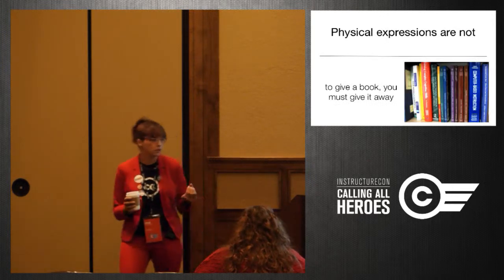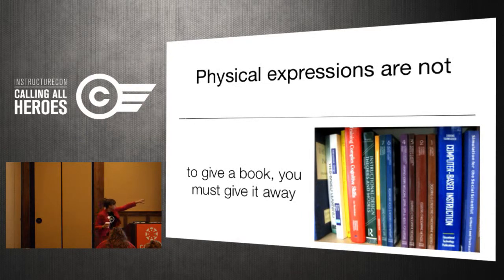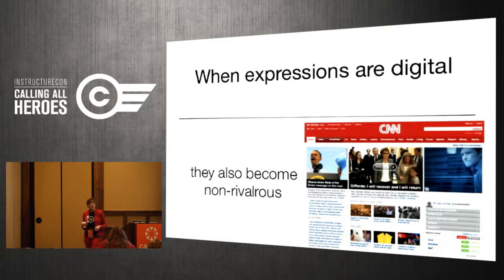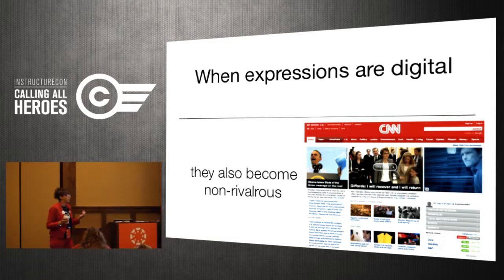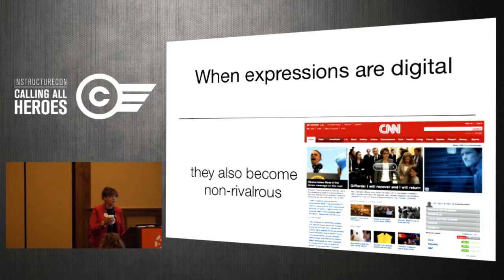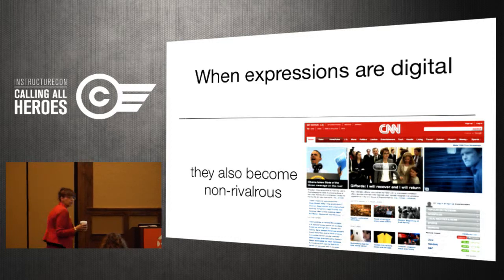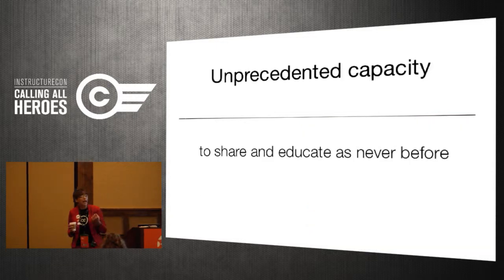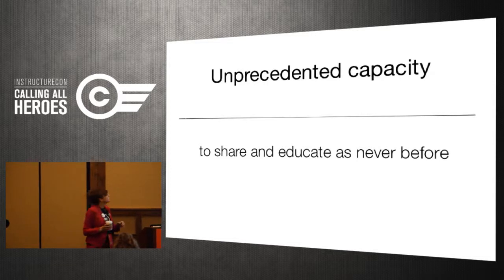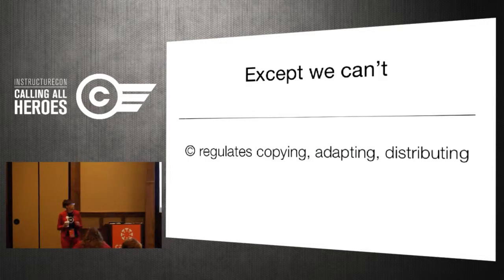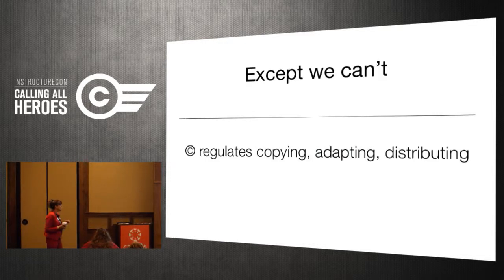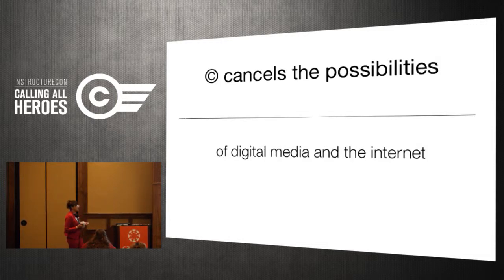However, when we put ideas in a physical expression, it becomes rivalrous — you have to give it to someone, and if someone else needs it, they have to wait. But when we make those physical expressions in a digital format, we have an unprecedented capacity to share and educate as never before. These ideas become non-rivalrous. My colleagues at Tacoma Community College — if we want to look at the same web page of CNN, we can do that simultaneously with millions of people all over the world at practically no cost. Except we can't when copyright is involved — copyright cancels and regulates what we can do with those materials.